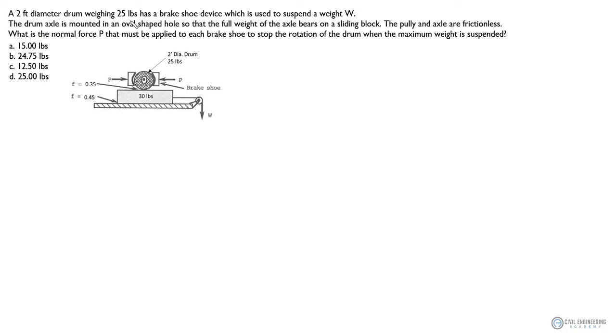We have a two-feet diameter drum weighing 25 pounds that has a brake shoe device which is used to suspend a weight W. So you can see here, there's a drum with a brake shoe system. When you push the brake, you'll stop the drum from rotating and then create the friction at the interface of the drum and this block. And the drum axle is mounted in an oval-shaped hole so that the full weight of the axle bears on a sliding block.